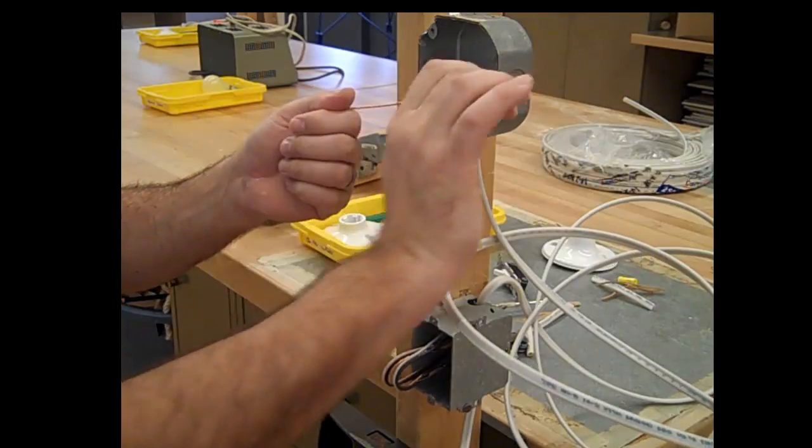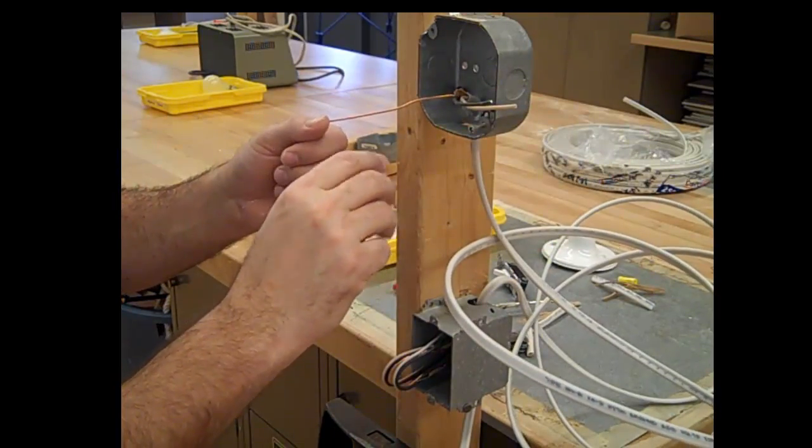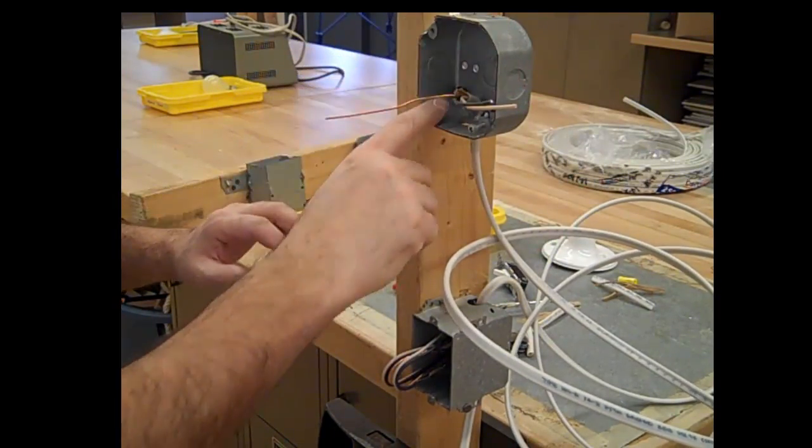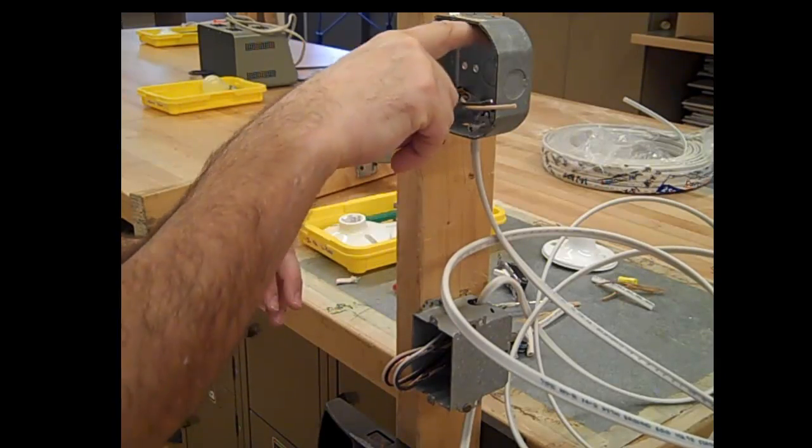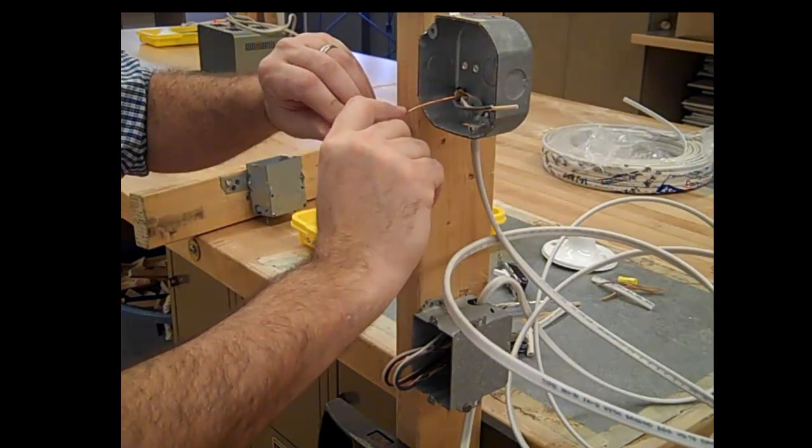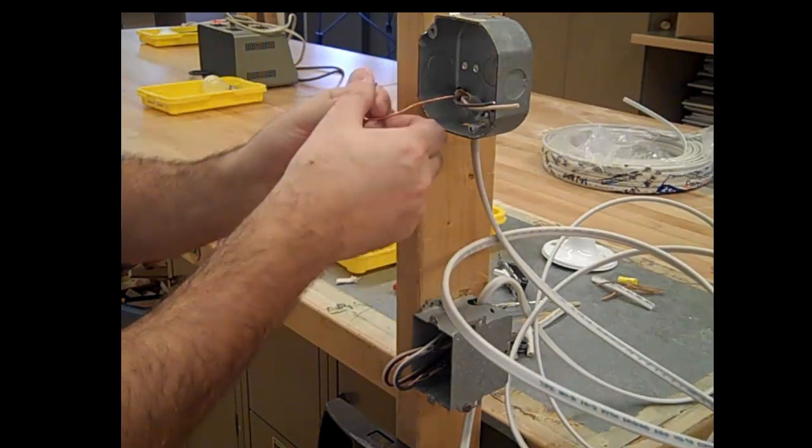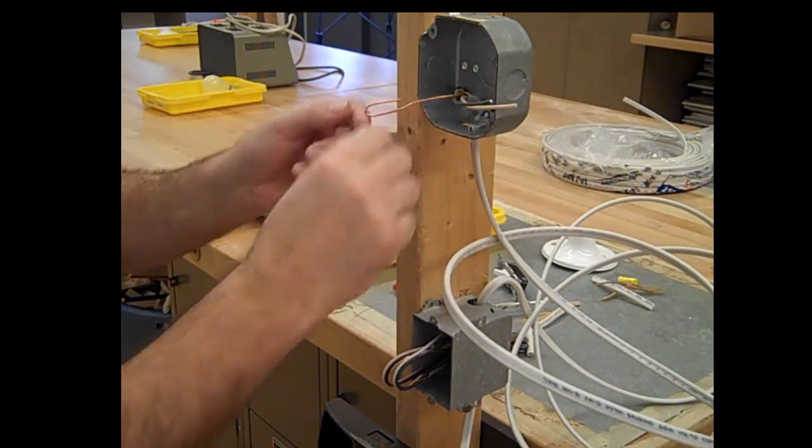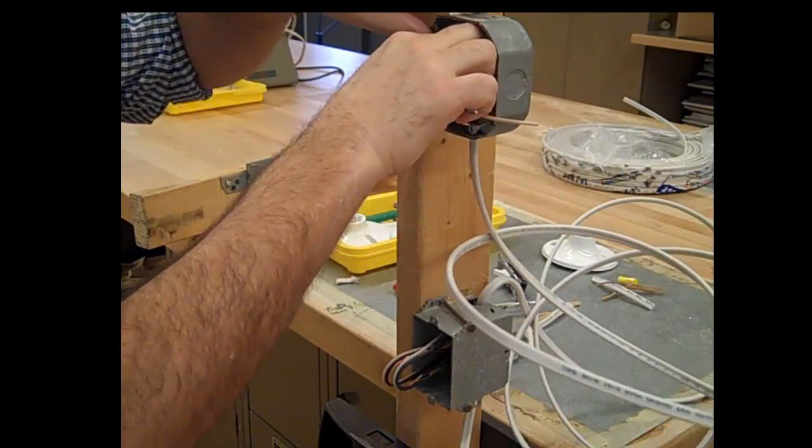Let's get the ground wire done first. In the back of the switch box you'll find a green screw. It might be on the bottom or towards the top. All you have to do is make a little hook out of this wire and then bend that wire so the hook goes behind the screw.